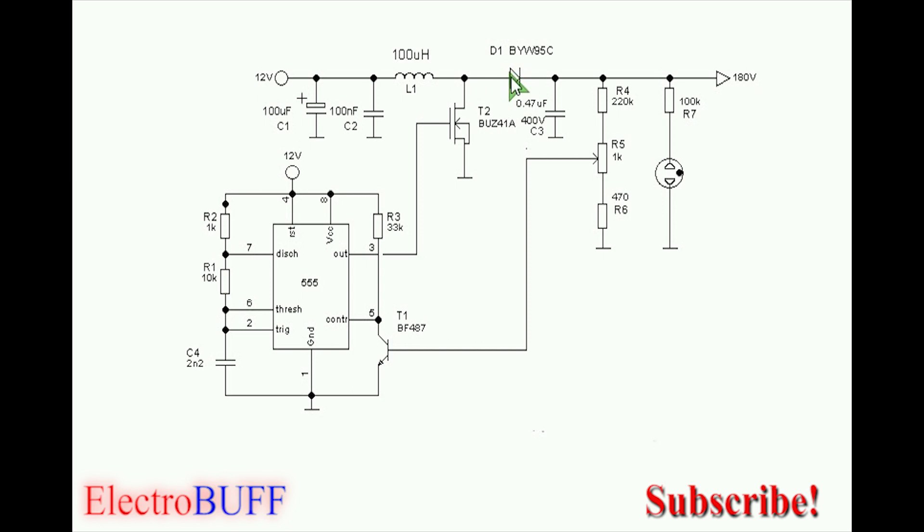This diode will be forward biased and it will open up and all the extra voltage will be connected to the output capacitor. The capacitor will charge up to the voltage which will be determined by the duty cycle of the output at pin 3. The capacitor will continue to charge up to about 180 volts.